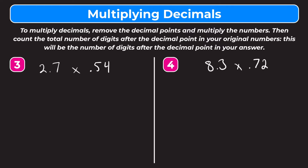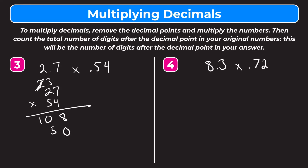Number 3, we have 2 and 7 tenths times 54 hundredths. Our first step is to remove the decimal points and rewrite them as whole numbers, so we have 27 times 54. 4 times 7 is 28, carry the 2. 4 times 2 is 8, plus 2 is 10. Now we're moving one place over with this 5, so we put a 0 here. 5 times 7 is 35, carry the 3. 5 times 2 is 10, plus 3 is 13.